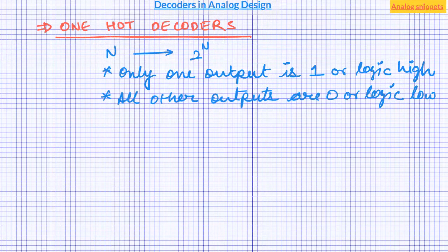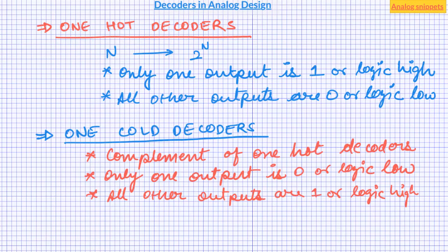A closely related variant is called one-cold decoder, where for a given input combination only one of the output is logic 0. So if we invert all the outputs of one-hot decoder we get one-cold decoder.